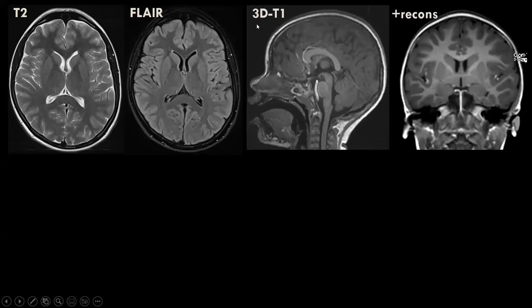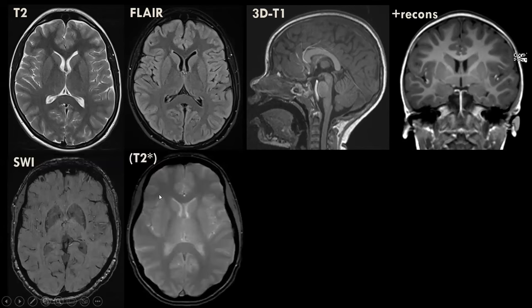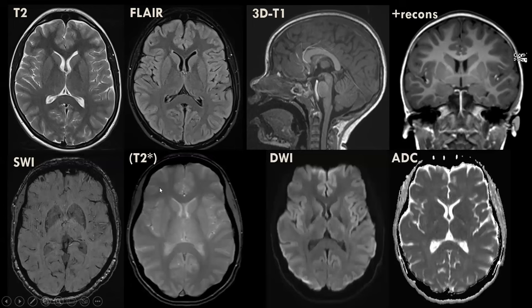For MRI, we perform several sequences. We have T2 and FLAIR sequences. We do 3D T1-weighted images — like an MPRAGE sequence — reformatted in multiple orthogonal planes; the coronal planes are especially important in suspected dementia patients. We also acquire susceptibility-weighted images or T2-star images, and diffusion-weighted images. A good dementia protocol includes: T2 and FLAIR, 3D T1-weighted images, susceptibility-weighted or T2-star images, and diffusion-weighted images.